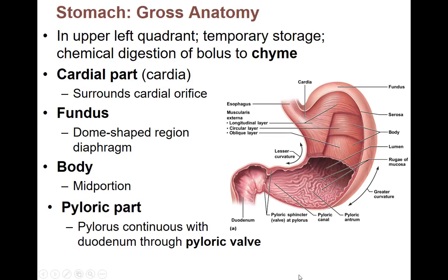Lab-wise, some of this should look familiar. Our stomach is in the upper-left quadrant, so it's kind of hanging out over here — you saw it on the cadaver. It's there just for temporarily storing food, helps break it down a little bit, and it takes that bolus of food — ball of food — and it breaks it down into what we now call chyme.